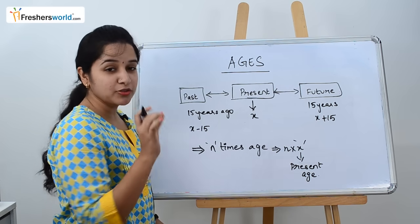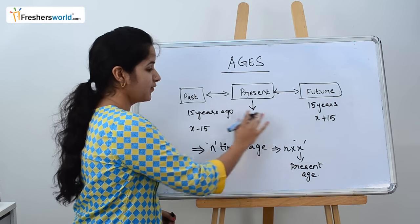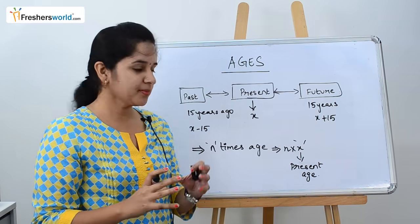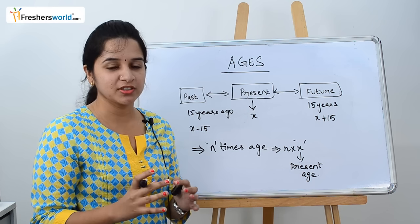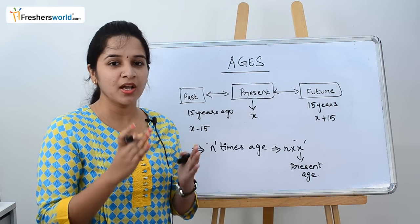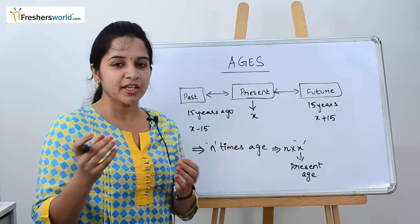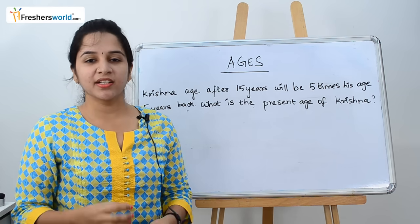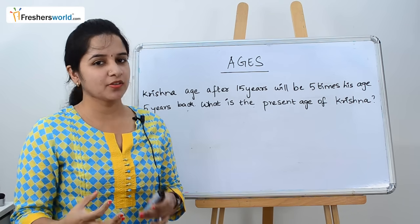To solve any ages problem, these four concepts should be very clear. It's not about how you solve the sum, it's about how well you understand the sum, how well you segregate it to get the answer better. To understand the ages concept better, let's solve a couple of problems.